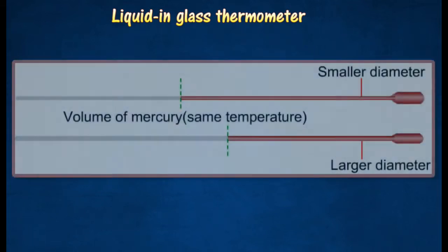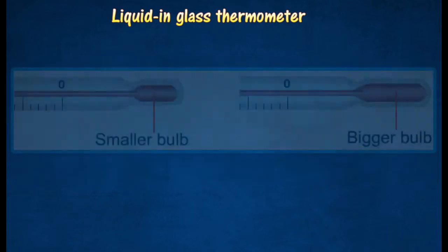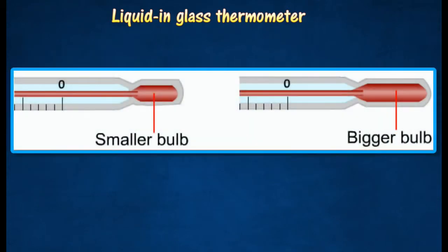A thermometer with a narrower capillary tube is more sensitive than a thermometer with a larger diameter capillary tube. A thermometer with a smaller bulb is more sensitive than a thermometer with a larger bulb.